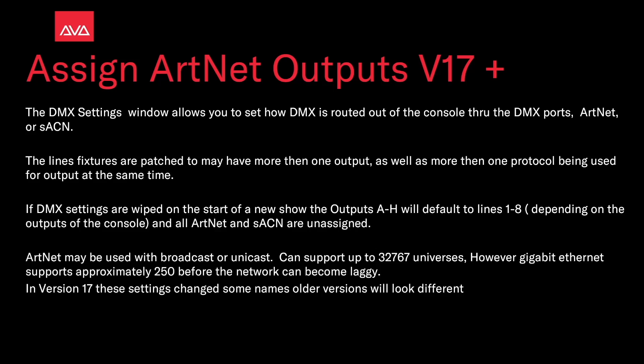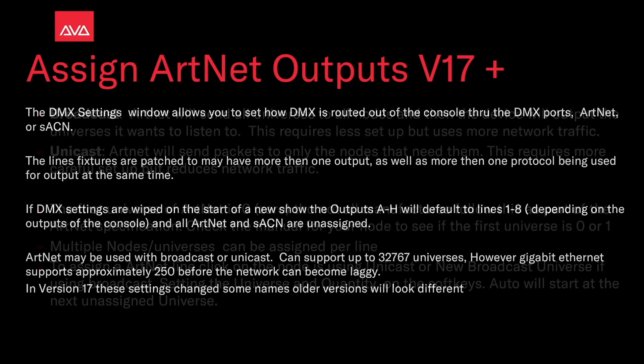ARTNET may be used with Broadcast or Unicast. It can support up to 32,767 universes; however, gigabit ethernet supports about 250 before the network becomes saturated. In version 17, these settings have changed some names, so older versions will look different.